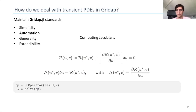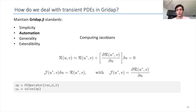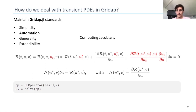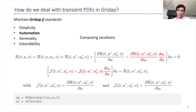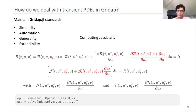Another nice feature of Gridapp is the ability to compute Jacobians using automatic differentiation. When we want to solve a nonlinear problem using the Newton method, we need the Jacobian, and with Gridapp we can define this Jacobian through automatic differentiation of the residual without needing to define it explicitly. In the transient case we want to preserve this feature, and we account for the extra Jacobians that come from having the time derivative of the unknown. We end up with two Jacobians: one is the derivative of the residual with respect to the unknown, and the other comes from the derivative of the residual with respect to the time derivative of the unknown. Again, we can define a transient finite element operator only by providing the residual, without an explicit definition of these two Jacobians.